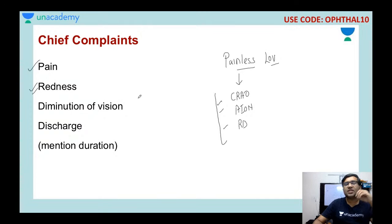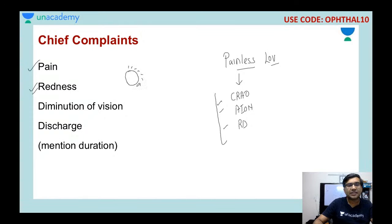When you say redness, the examiner will ask which type: is it superficial, deep, or circumcorneal congestion? If you see reddish vessels around the cornea, that is circumcorneal congestion. As soon as you mention circumcorneal congestion, the examiner may ask other causes — uveitis, keratitis, and angle-closure glaucoma are all causes of circumcorneal congestion.